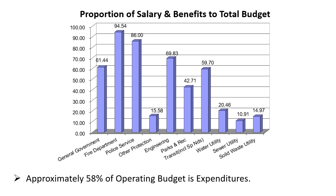Our most significant cost is salaries and benefits — it's about 58% of our budget, roughly $90 million. You can see some of our areas like fire and police are very labour intensive; the majority of their expenditures relate to that. But overall, salaries and benefits really play a major factor in the overall expenditures of the City.